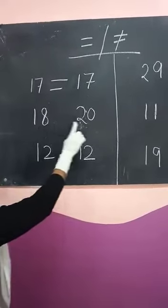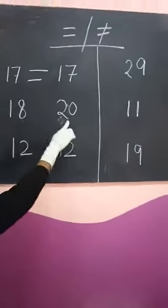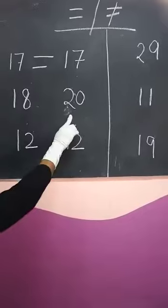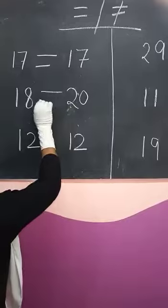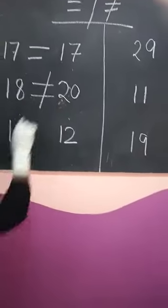this is 18, this is 20. Kya dono ek jaisi dikh raha hai? No, they are not equal. So, we will put a sign of not equal to.